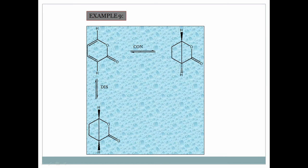Example 9: Two hydrogens are on opposite sides. Subjected to con-electrocyclization — opposite groups come to opposite sides in the product. If subjected to dis-electrocyclization, both hydrogens are opposite, so they come to the same side in the product.